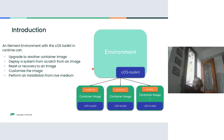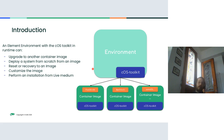What can an Elemental environment with the COS toolkit do at runtime? It can upgrade to another container image, deploy a system from scratch from an image, perform reset or recovery, and customize the image during upgrade. For example, if you need specific kernel modules for a group of machines, you can specify during upgrades that those packages be installed on top of the container image to be deployed — in a configurable way through cloud-init files.